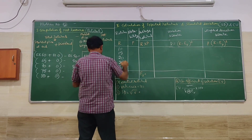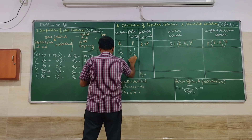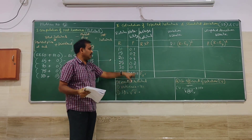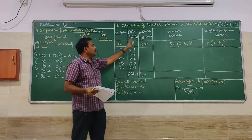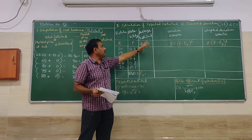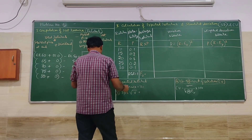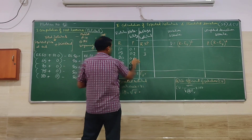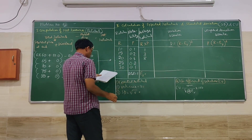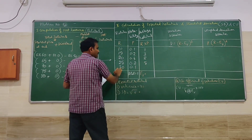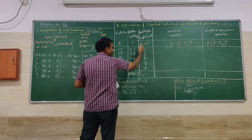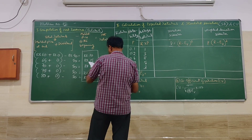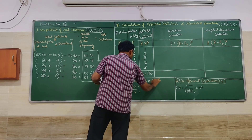Now I take the probabilities given in the problem: 0.1, 0.2, 0.4, 0.2, and 0.1. The total is equal to 1. We multiply each return by its probability (R × P) to find average returns: 10×0.1=1, 15×0.2=3, 20×0.4=8, 25×0.2=5, 30×0.1=3. Adding these gives the expected return, which equals 20.